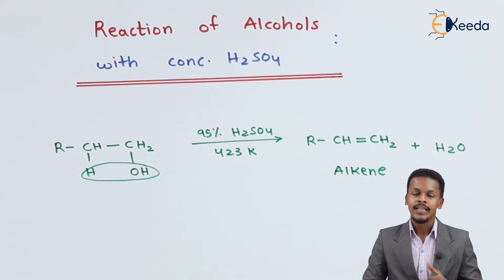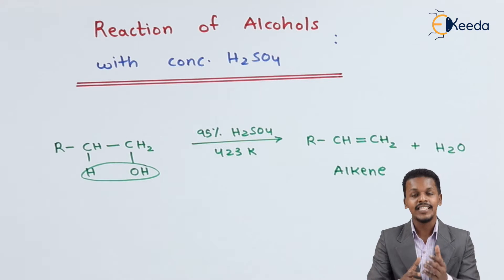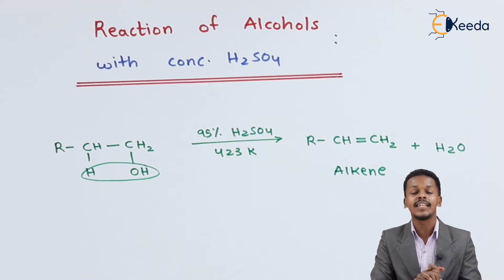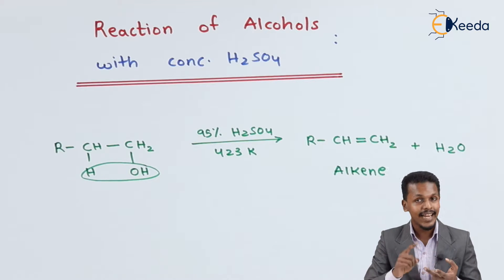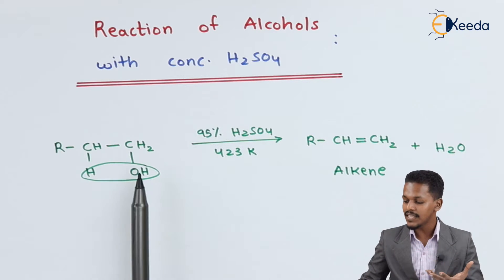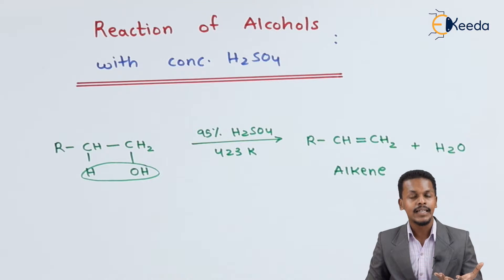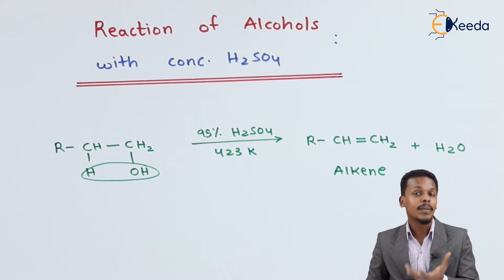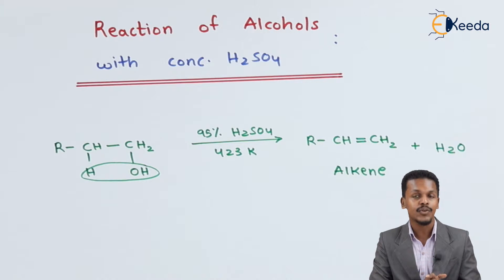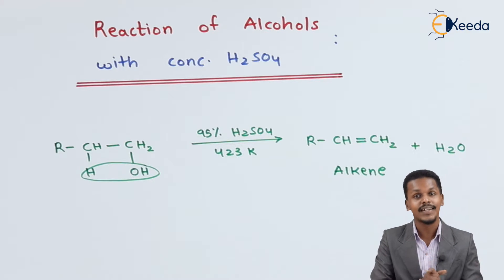This is the general reaction. Since there are classifications of alcohol — primary, secondary, and tertiary — we need to understand which alcohol is more reactive and makes it easier to remove the water molecule. The ease of forming an alkene follows the order: tertiary > secondary > primary. That's why primary alcohol requires 95% H2SO4 at high temperature. Now let me discuss what conditions are needed for secondary alcohol.